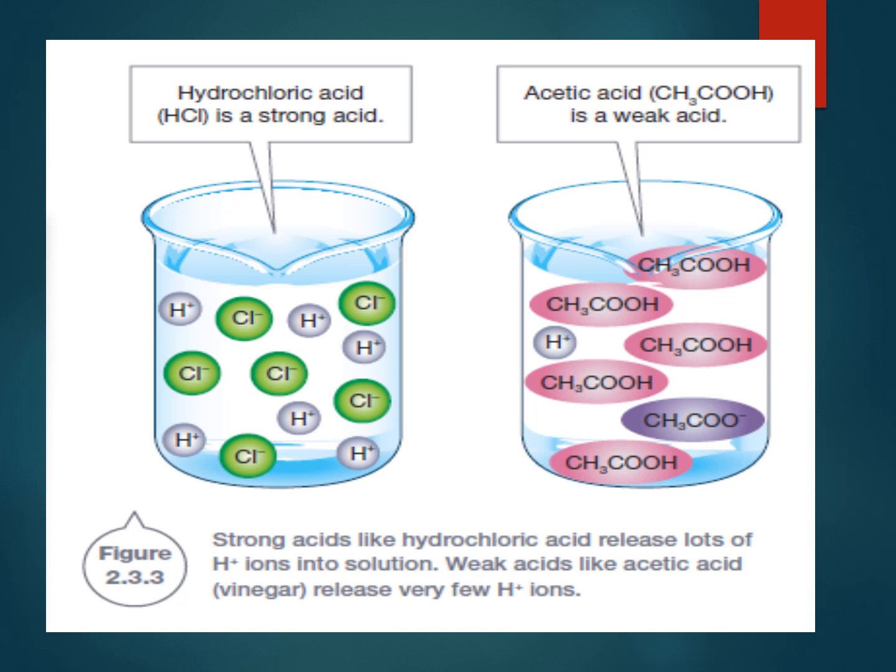Hydrochloric acid is a strong acid — you can see lots of hydrogen ions being released into the solution. Whereas with vinegar or acetic acid, only very few hydrogen ions are released, so it doesn't have the same acidity.